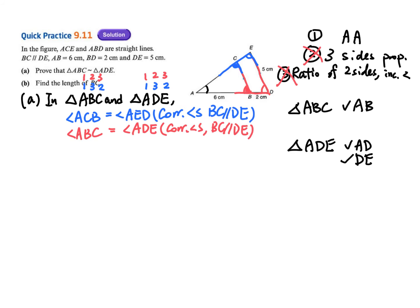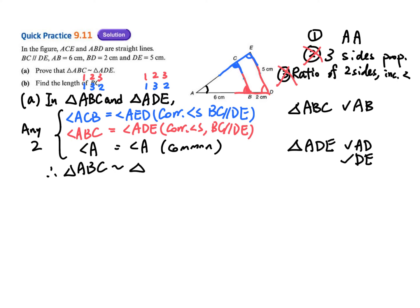Or you can say angle A equals angle A — common angle. You only need any two of them. Therefore, triangle ABC is similar to triangle ADE. Reason: AA.